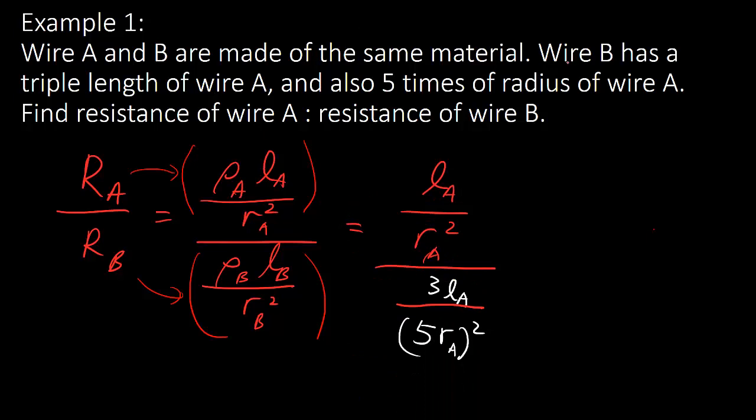After that, by looking at the questions, since questions say wire B has a triple length of A and also 5 times of radius at A, then what I do is, of course, change L B and R B with what is described here. Then you've got 3 L A and 5 R A here. One thing that you should pay attention here is 5 R A is in a bracket because you simply substitute and the square is outside. So you have to square the 5 as well.